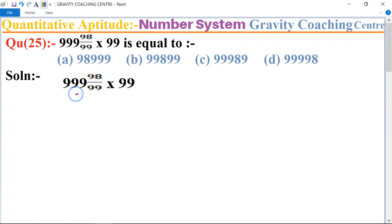First we separate the whole number and fraction number. So here, 999 plus 98 upon 99, and bracket of 99.